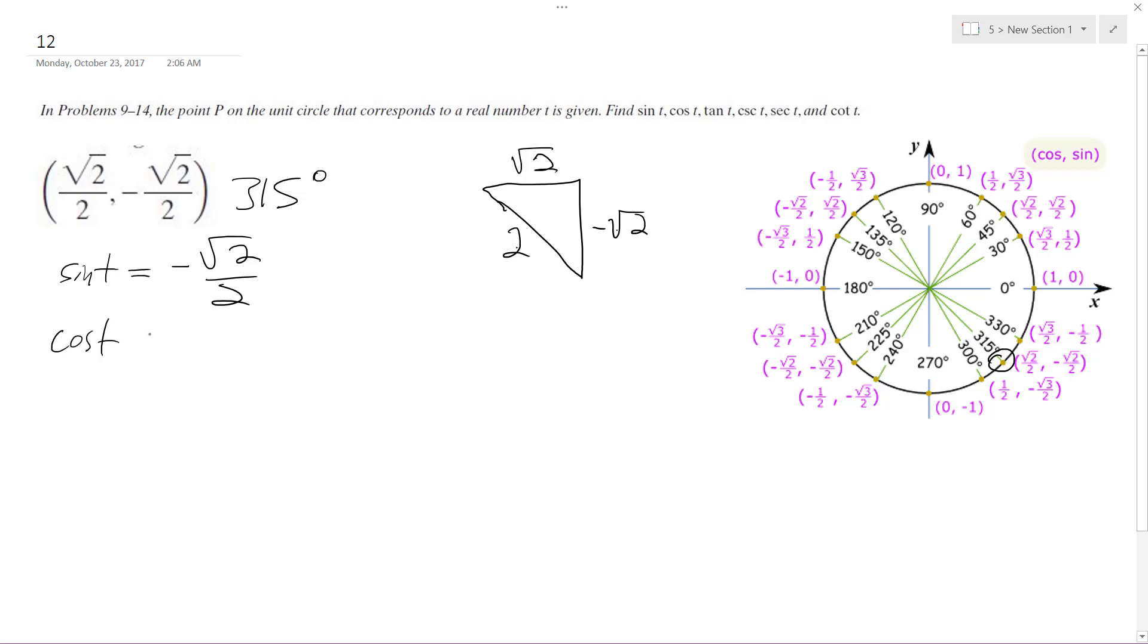So that means the cosine of t, which is equal to x over r, is going to be equal to root 2 over 2.